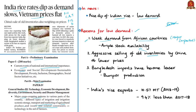The second reason for the price dip is the aggressive selling of old inventories by China at lower prices, which is a significant influence. The third reason is the decrease in purchase by Bangladesh. In 2017, Bangladesh was facing a rice shortage and India's exports helped them avert it. But in the previous year, Bangladesh achieved bumper production, resulting in low demand and contributing to the price dip.